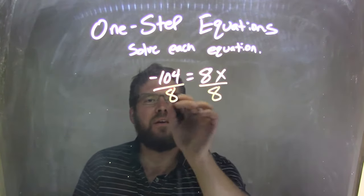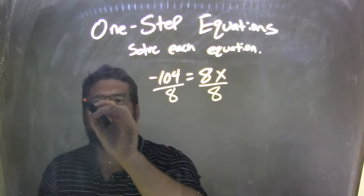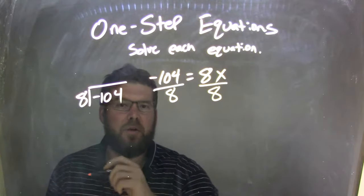So divide by 8. Well, that doesn't help me. What's negative 104 divided by 8? Well, let's go look at it. 8 goes into negative 104. Let's use the traditional method of long division here.